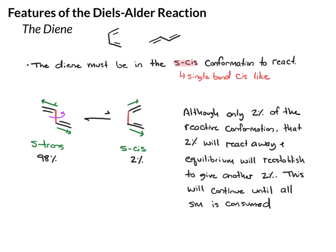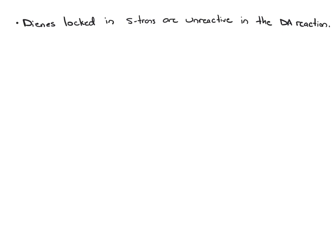Here's how this works: we need this reactive conformation, and although only 2% of the molecules exist in it, if we do a Diels-Alder reaction — let's keep it simple and react it with ethylene to get a product — that 2% will react away. Then the equilibrium will re-establish to give another 2% of the reactive conformation in solution, which will continue to react to give product. That process will continue until all of the starting material has been consumed.